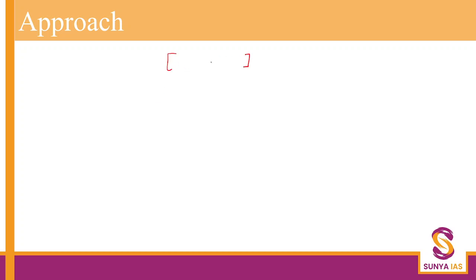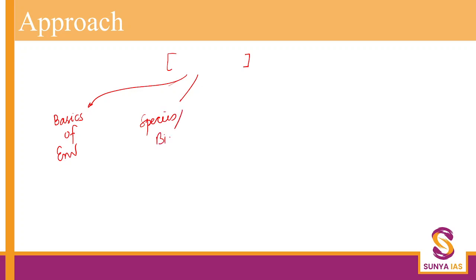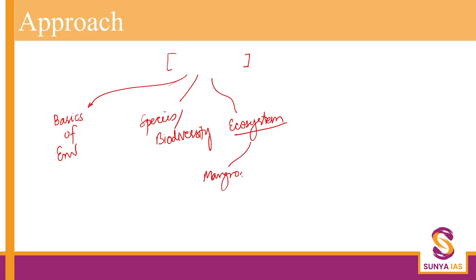The basic approach is that I have divided the whole set of lectures into 10 broad themes. The important themes include, for example, basics of environment. I will also be covering species and biodiversity, then moving on to various kinds of ecosystems — for example, aquatic ecosystems, ecotones, mangroves, and corals. All the important updates will be covered within those lectures.